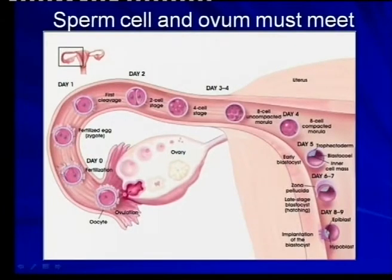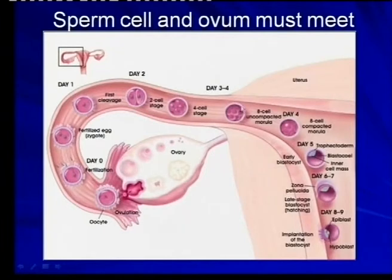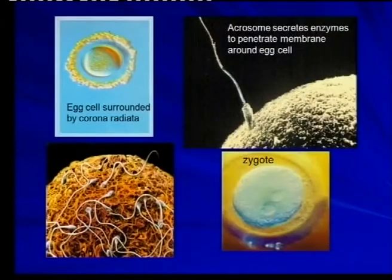The sperm cells must swim through the vagina and up into the uterus to reach the ovum. That is why the sperm has a tail — it has to swim with its tail to reach the egg. The egg then moves down until it is a blastocyst ready for implantation in the uterine wall.